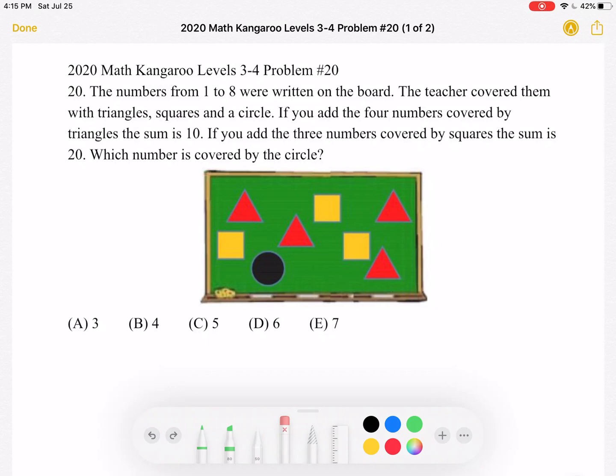If you add the four numbers covered by triangles, the sum is 10. If you add the three numbers covered by squares, the sum is 20.